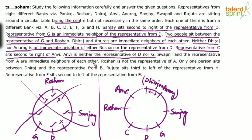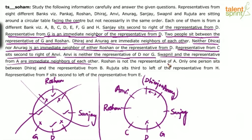Swapnil and the representative from A are immediate neighbors, and Roshan is not the representative of A. The five positions already occupied are Roshan, Anvi, Dheeraj, Anurag, and Sanjay. Swapnil cannot go in D's position since that would require A to be adjacent, which doesn't work. If Swapnil takes C's position, Roshan would be A — but Roshan is not A. So Swapnil takes G's position and Sanjay becomes the representative of A.